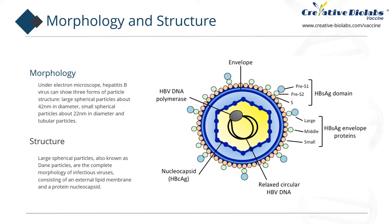The shell contains an embedded protein that involves the virus binding to susceptible cells and entering the cell. Small spherical particles and tubular particles are composed of the same lipid and protein as the virus lipid membrane, forming a part of the surface of the virus particles, known as the surface antigen, which is not infectious.